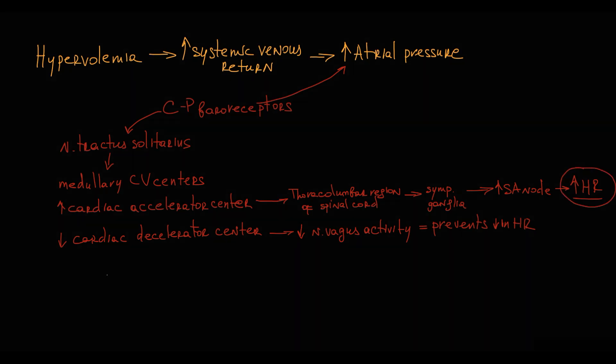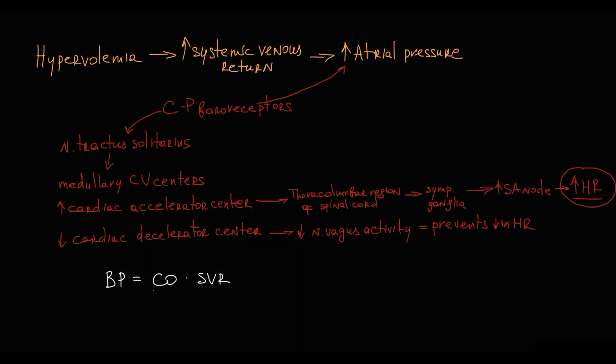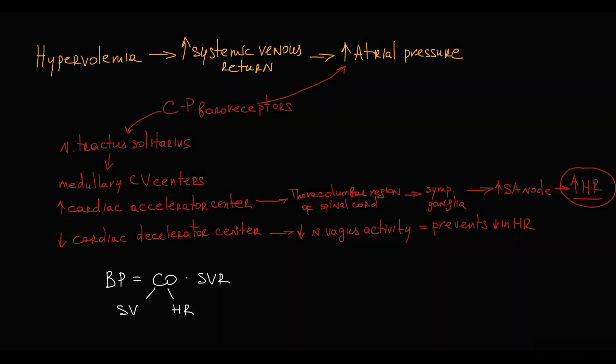The logic of tachycardia is that from formula of blood pressure, blood pressure equals cardiac output times systemic vascular resistance, and cardiac output equals stroke volume times heart rate. So increase in heart rate causes increase in cardiac output, so the more volume of blood left ventricle pumps per minute.